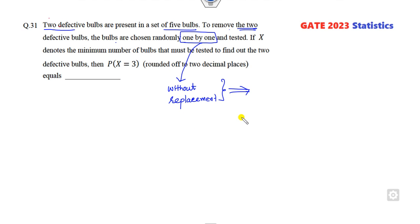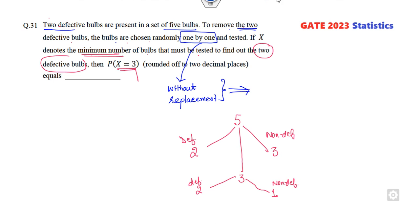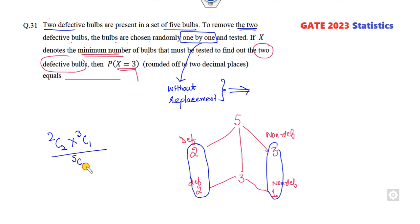Two defective bulbs out of five — so three are non-defective. Let x denote the minimum number of bulbs that need to be tested; x equals 3. You choose three bulbs, your target is to find the two defective ones, meaning one of the three is non-defective. Once you draw this diagram, you can write the answer: 2C2 multiplied by 3C1 divided by 5C3. That gives 1×3 divided by 10, so the right answer is 0.3.